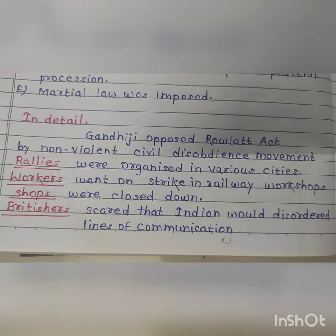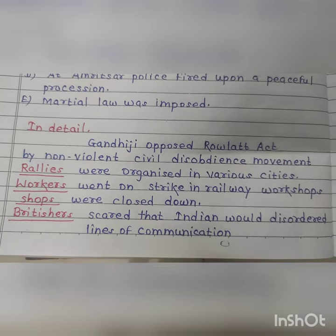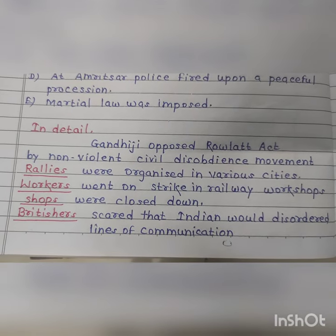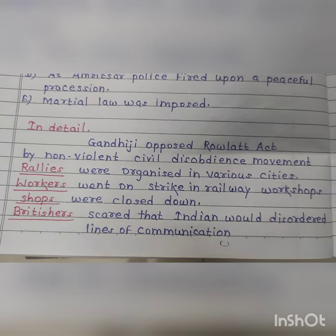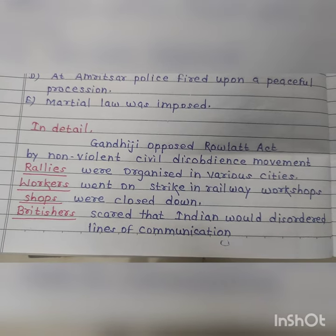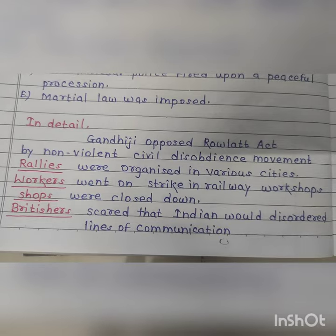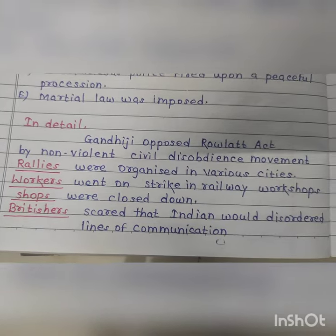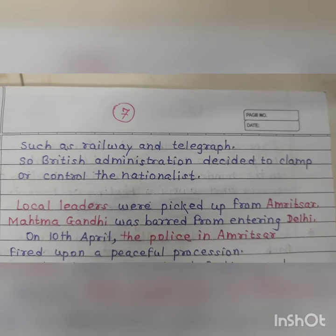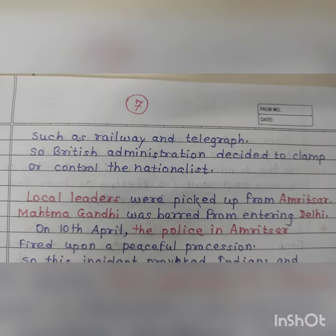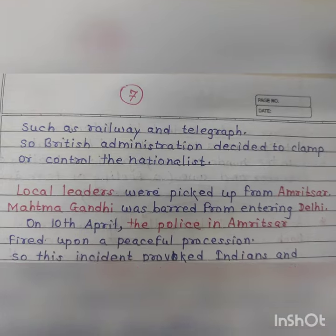The Britishers became scared that Indians would disorder the lines of communication. There were rallies and workers had gone on strike in railway workshops. The Britishers were scared that the Indian communication system, such as railways and telegraph, was being disturbed. So the British administration decided to clamp down and control the nationalists.